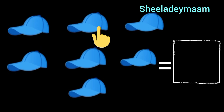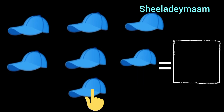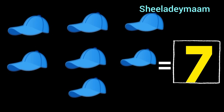1, 2, 3, 4, 5, 6, 7. 7 caps. Children, there are 7 caps. So write number 7 in the box.